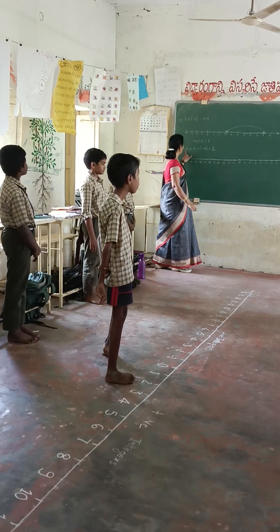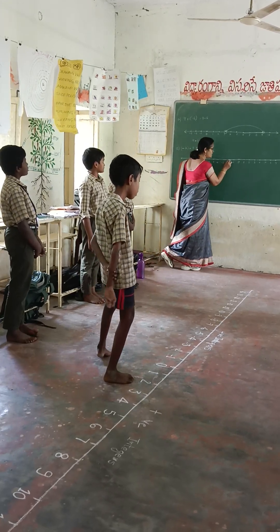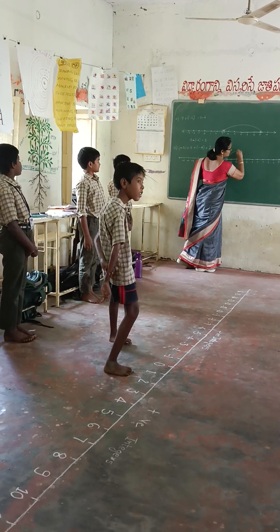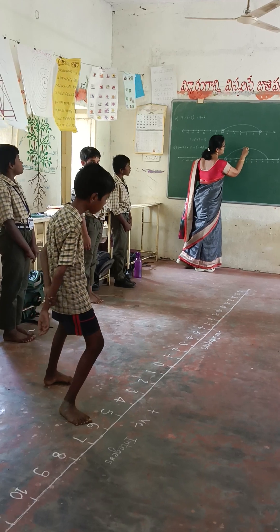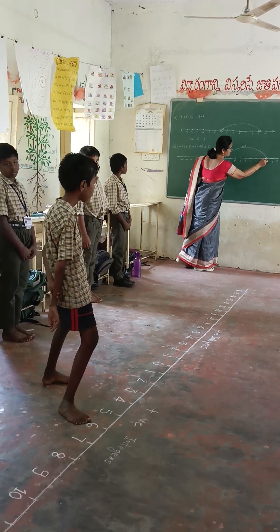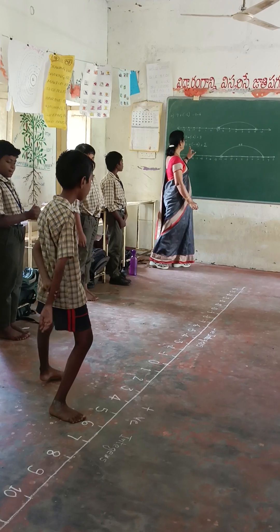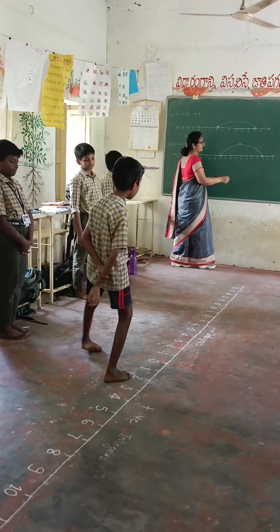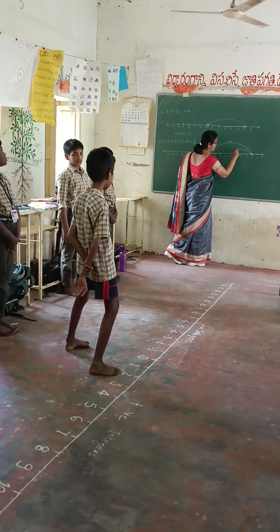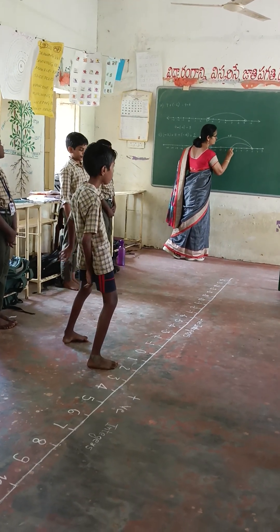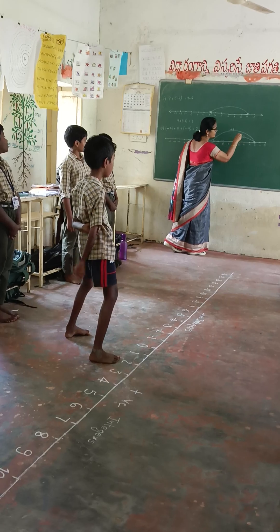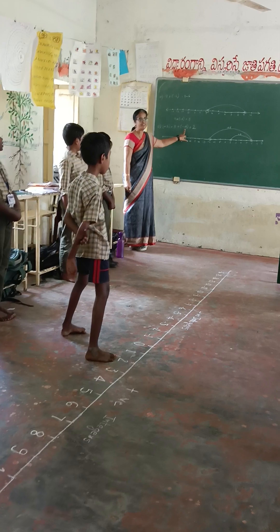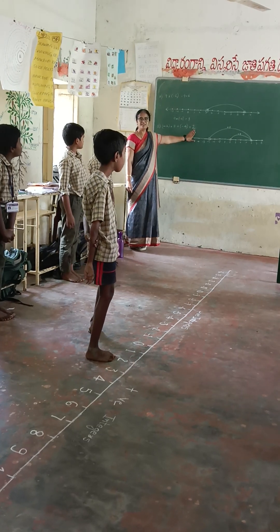First, the first number is minus 2. Avinash is at minus 2. He added 8, so he goes to 6. Very good. Then minus 4 — minus means left — so he reaches 2. So minus 2 plus 8 plus minus 4, the answer is 2.